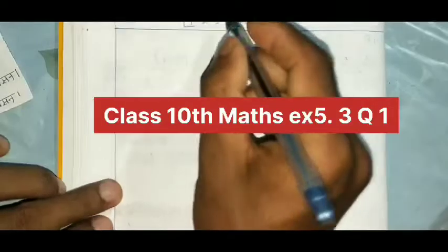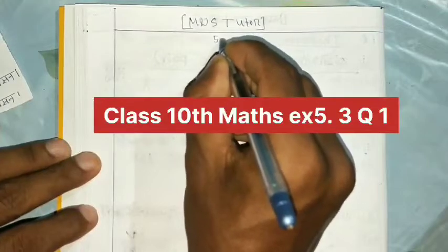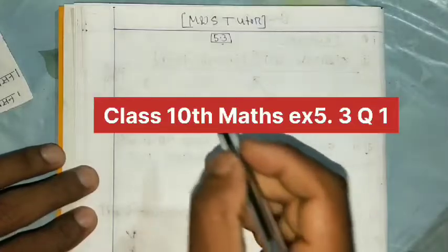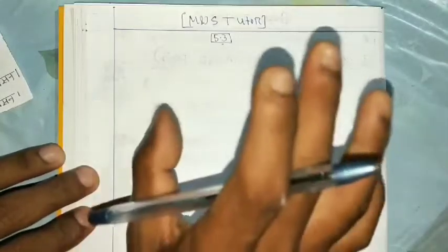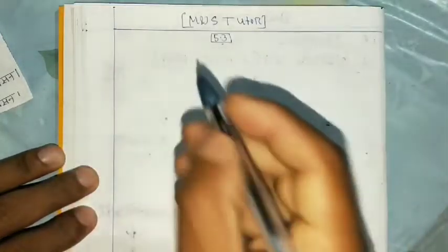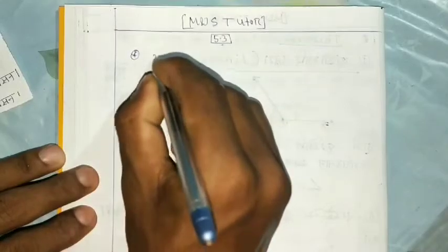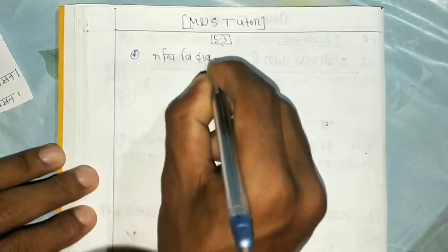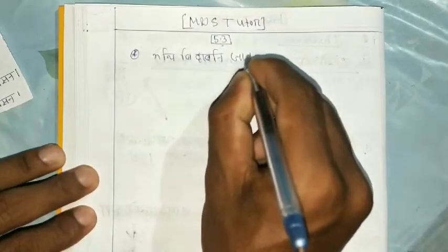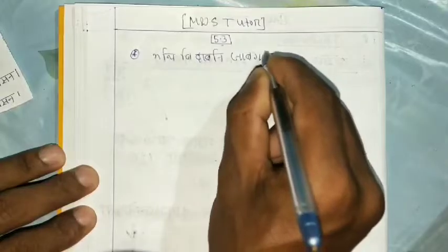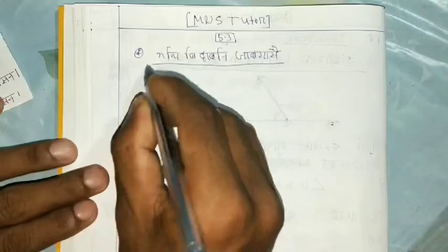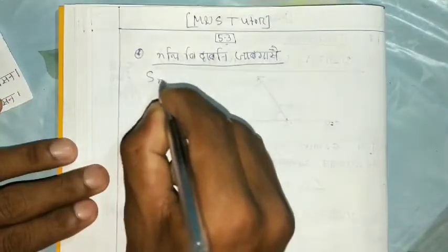This is the class of 5.3. Exercise is 5.3. This is the formula of 5.3. This is the formula of ntb2.